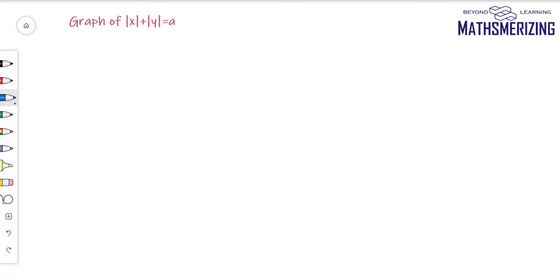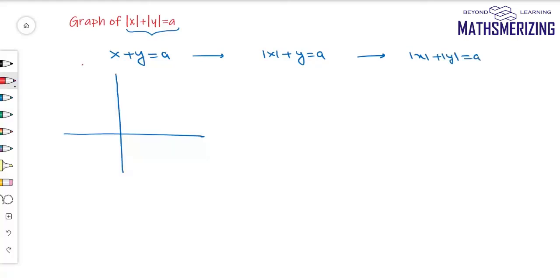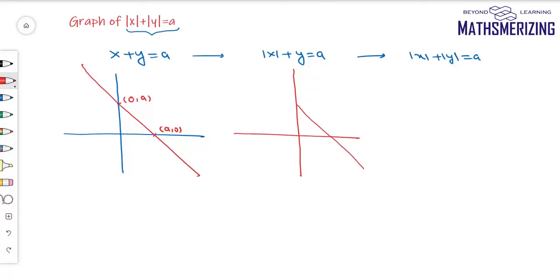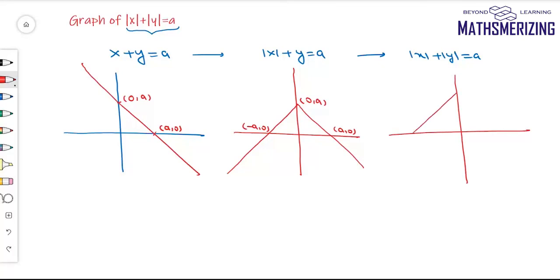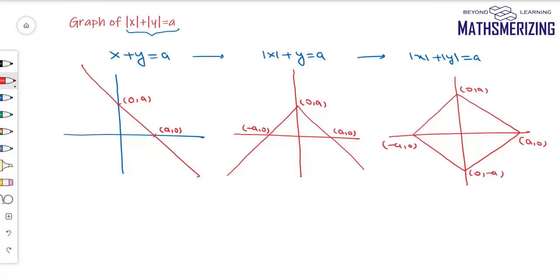One very important graph used in area and straight lines problems is |x| + |y| = a. The basic graph is x + y = a, a line with intercepts (a, 0) and (0, a). Applying the |x| transformation: erase from the second and third quadrant and reflect right onto left. Then for |y|: erase from the third and fourth quadrant and reflect up on down. The graph of |x| + |y| = a represents a square.